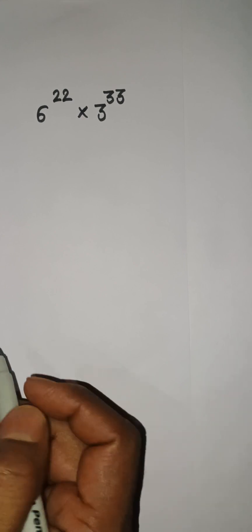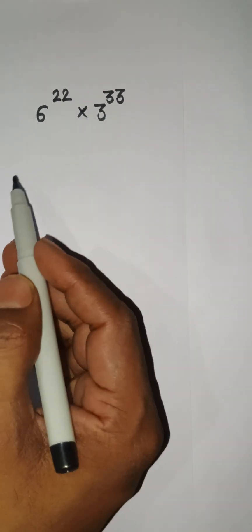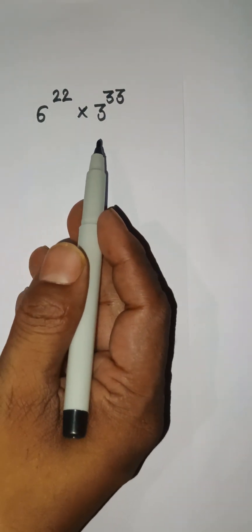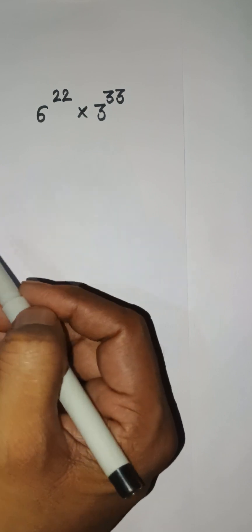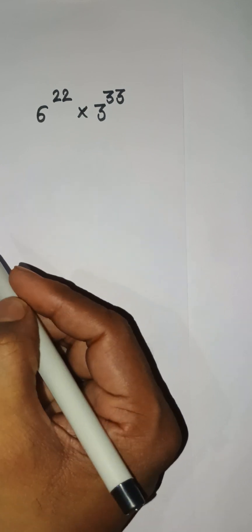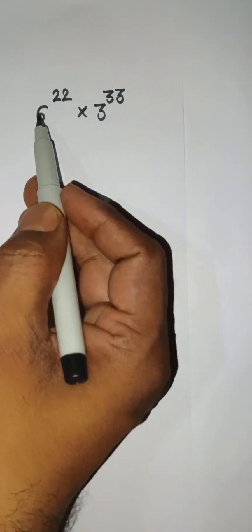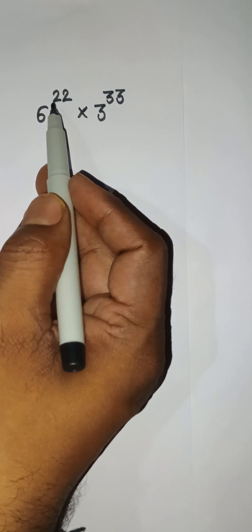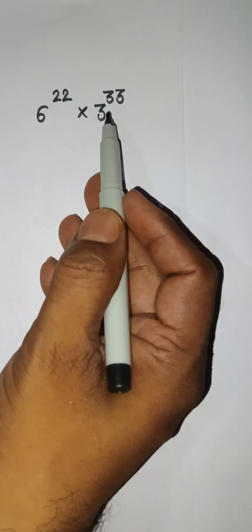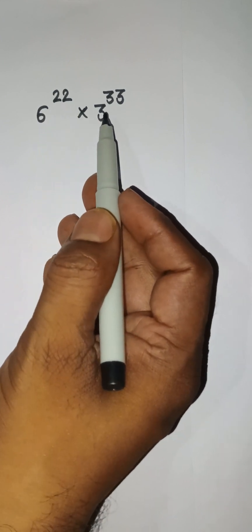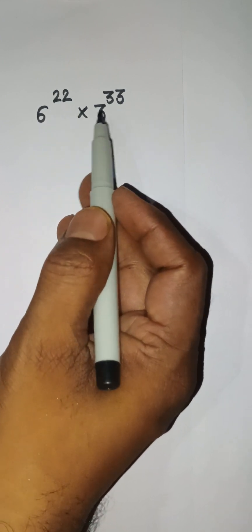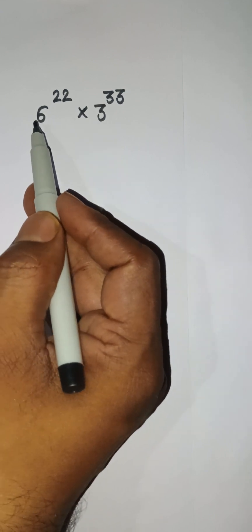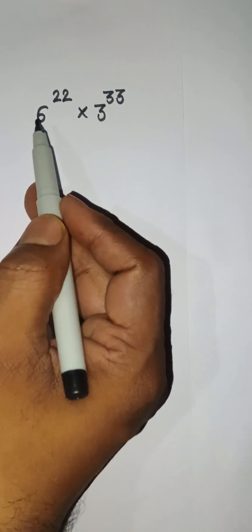Hello everyone. We have this problem: 6 to the power 22 multiplied by 3 to the power 33. How can we solve this problem? Here you are seeing that 22 is the factor of 2 and 11, and 33 is the factor of 3 and 11. And 6 is the factor of 2 and 3.